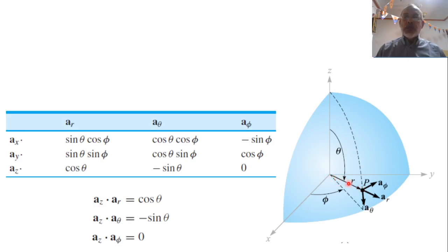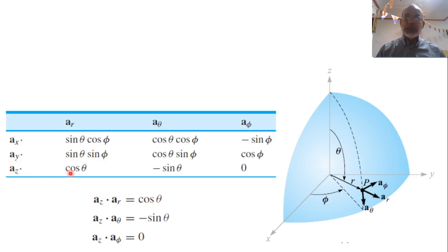To transform unit vectors from spherical to Cartesian: the unit vector in the R direction equals â_x sinθ cosφ + â_y sinθ sinφ + â_z cosθ. Similarly, we can find â_θ and â_φ in terms of the Cartesian unit vectors.